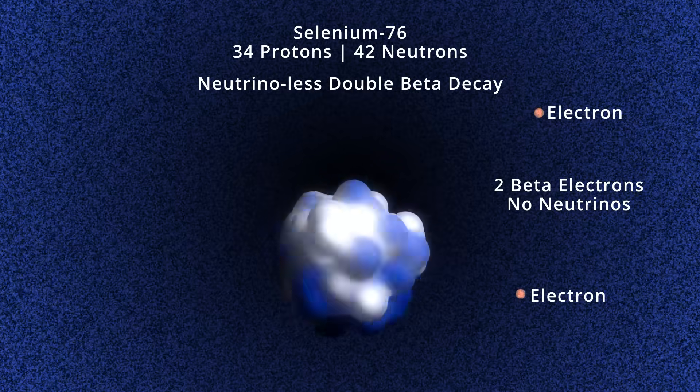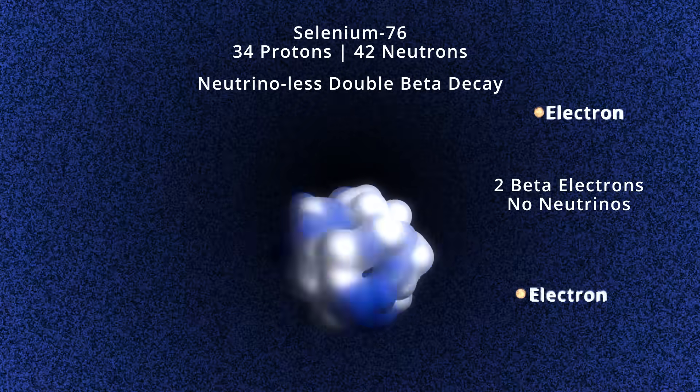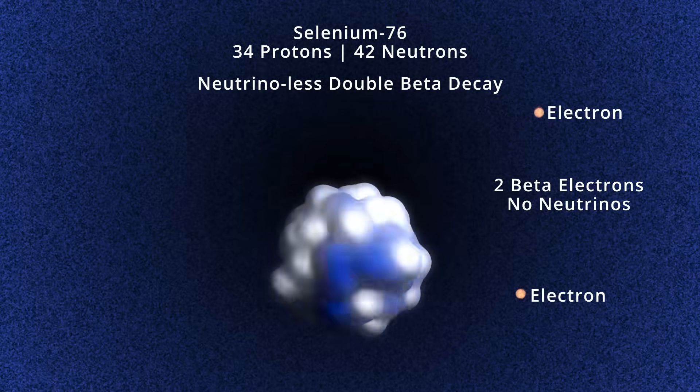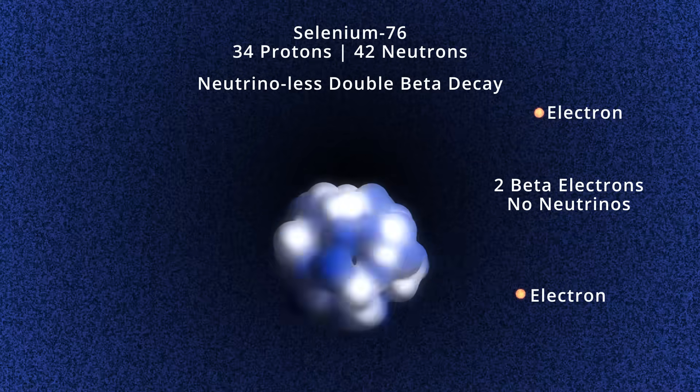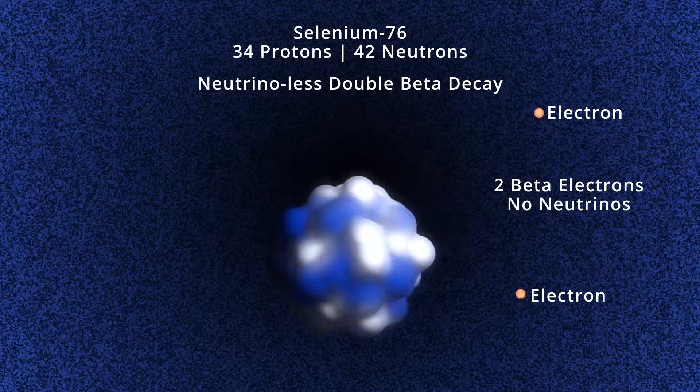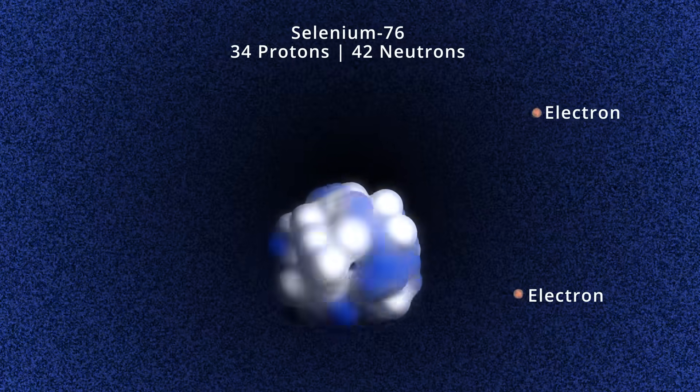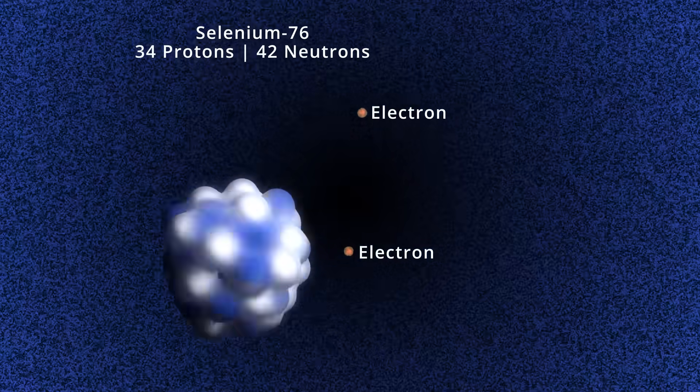No neutrinos appear. This trick is called neutrino-less double beta decay. This quantum sleight of hand has produced two electrons with nothing else to balance the decays. This violates an assumed truth in nature, that one cannot create electrons without associated antiparticles. So this would be shocking.